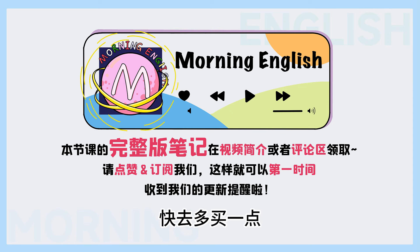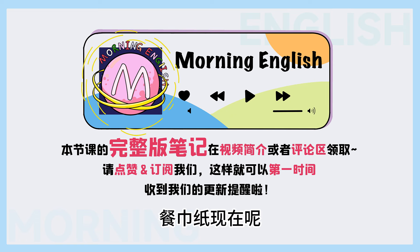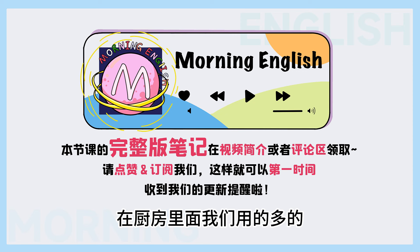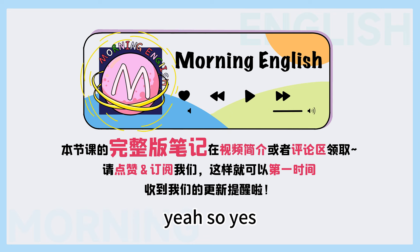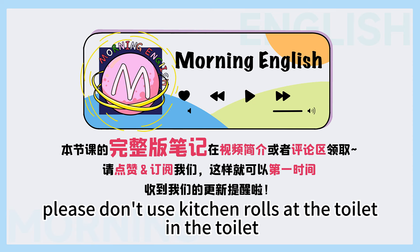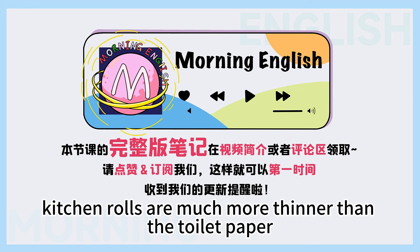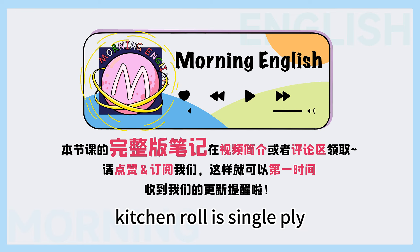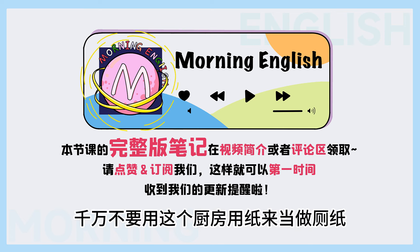Now there is one more type that's necessary in every kitchen — 餐巾纸, 厨房用纸 — called kitchen rolls. Rolls就是一绝一绝 (one roll). They do look like toilet rolls, but they don't do the same job. Please don't use kitchen rolls in the toilet, because kitchen rolls are much thinner than toilet paper. Kitchen roll is single ply and toilet paper is double ply.